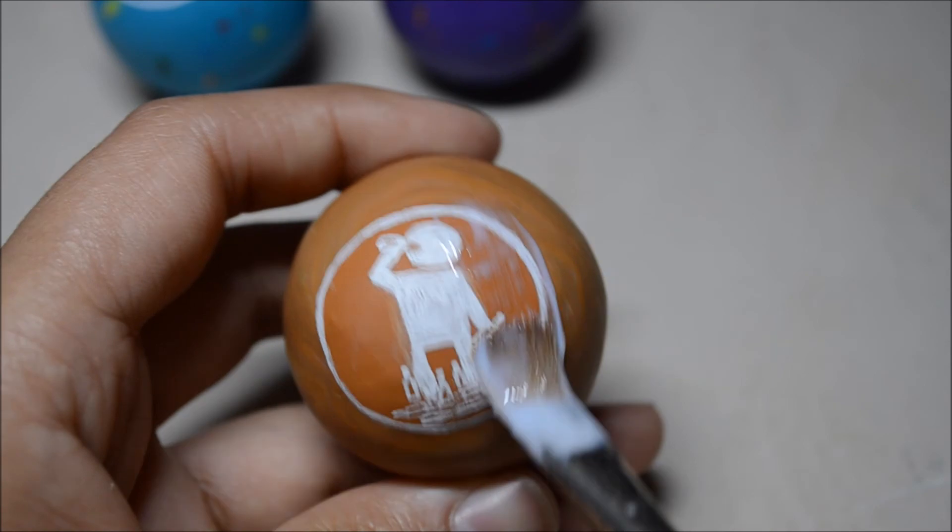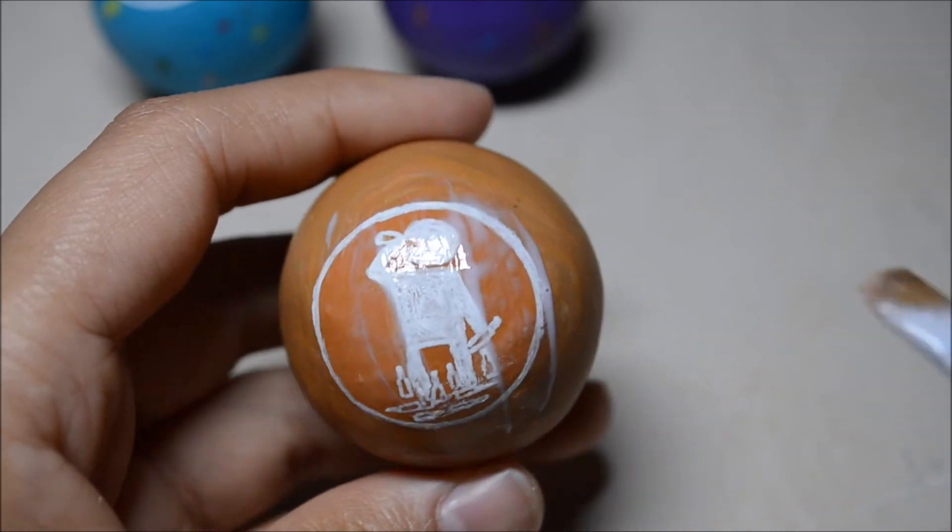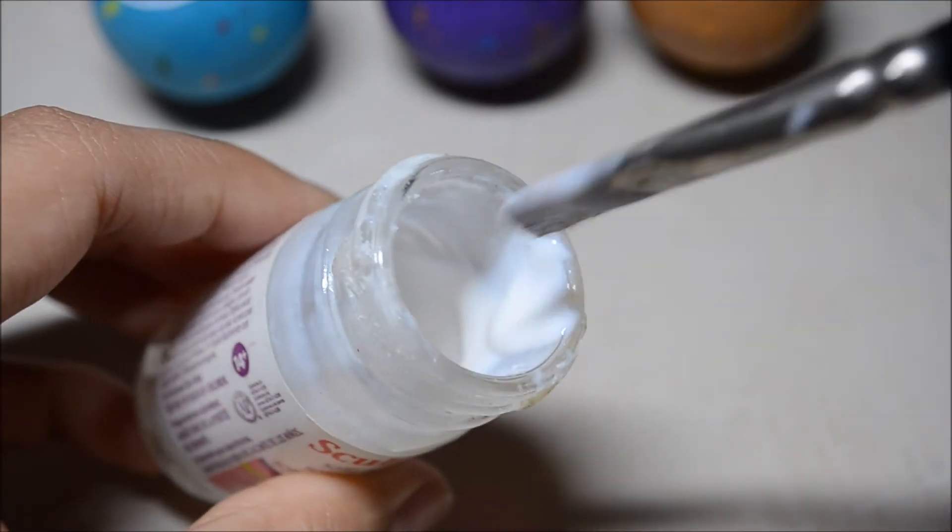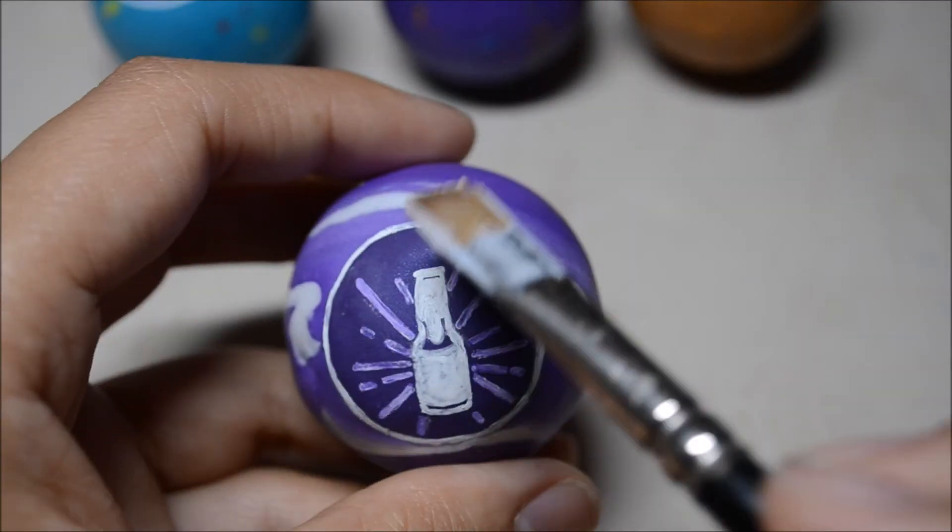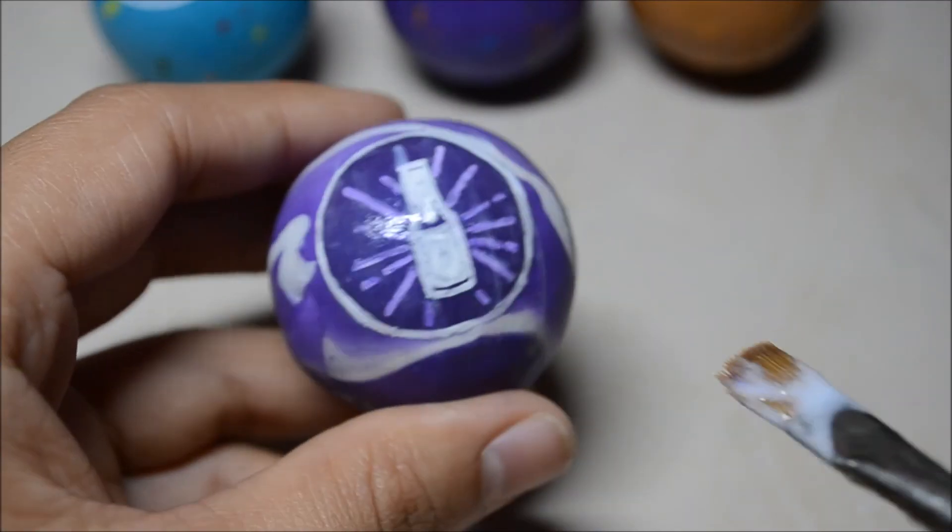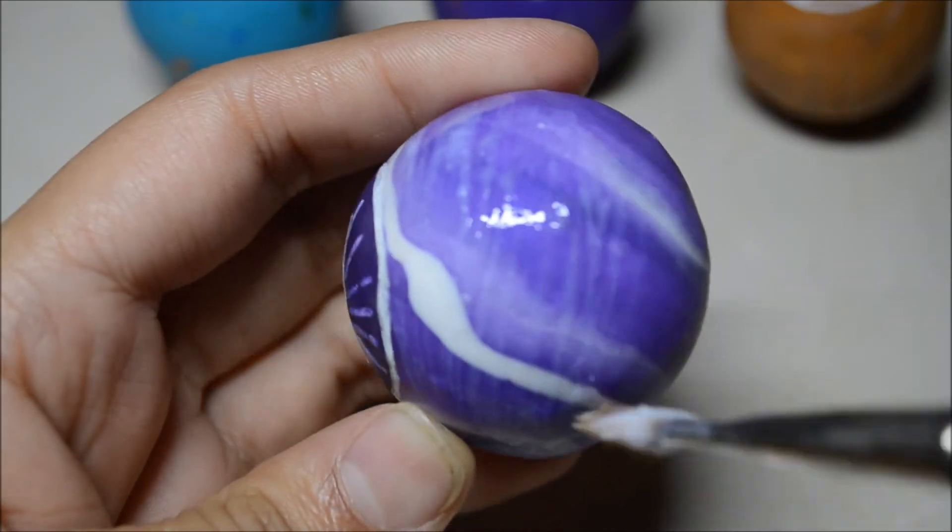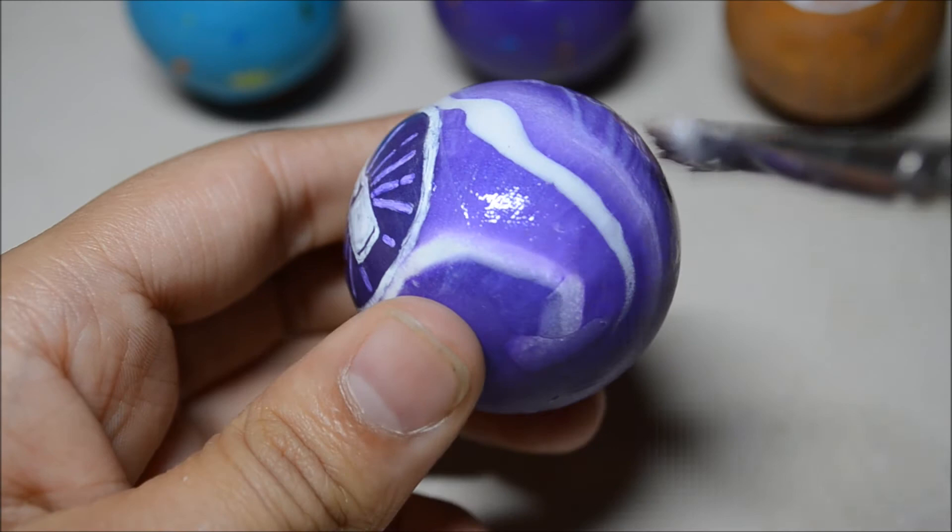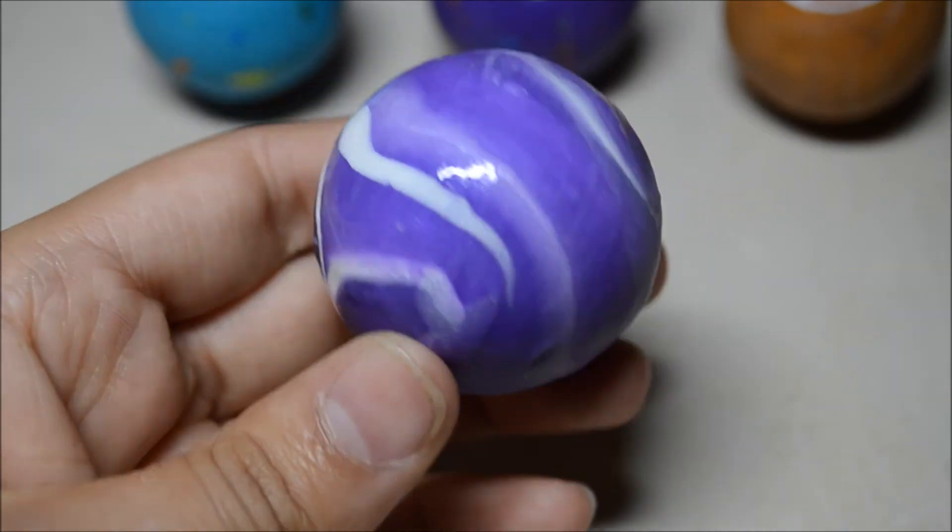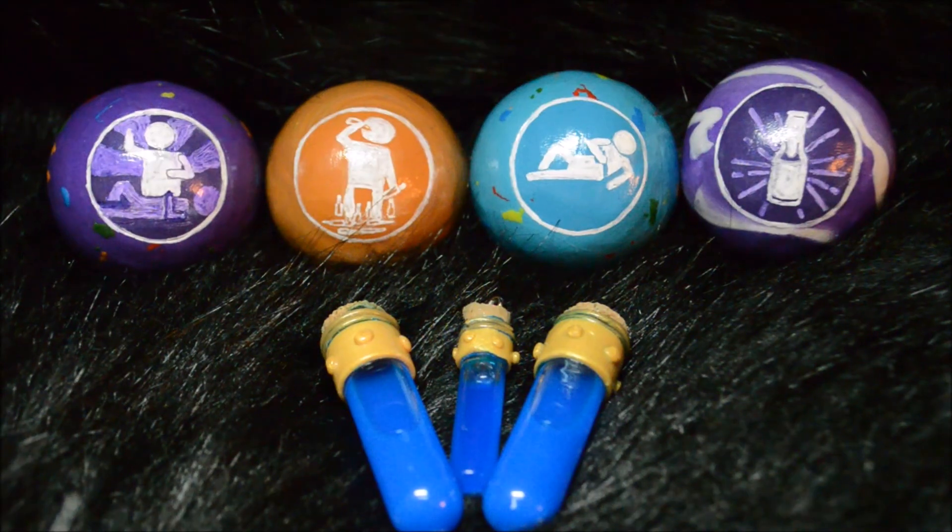If you do it multiple times, the paint will come off and it will smudge the artwork. All that work for nothing would be wasted, so just do it once. And then once that dries, just get the rest of the gumball and glaze the rest of it.